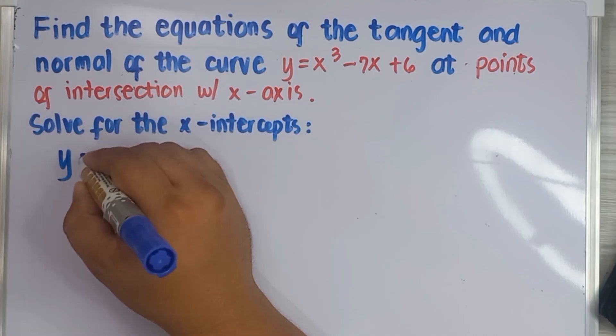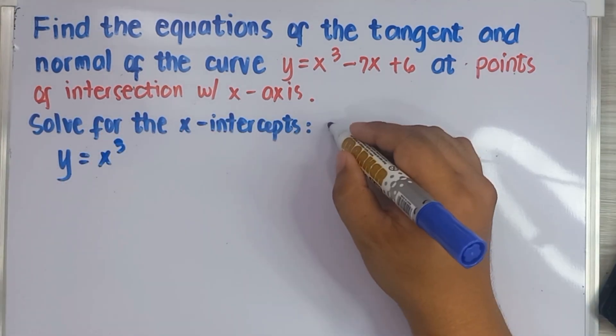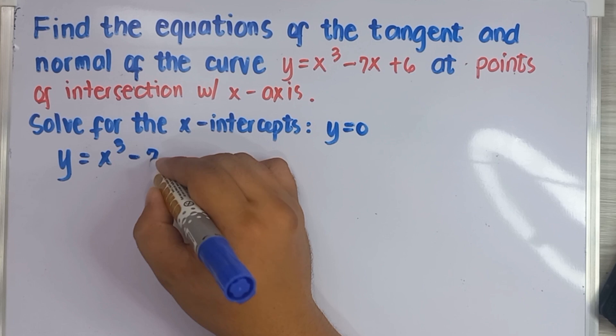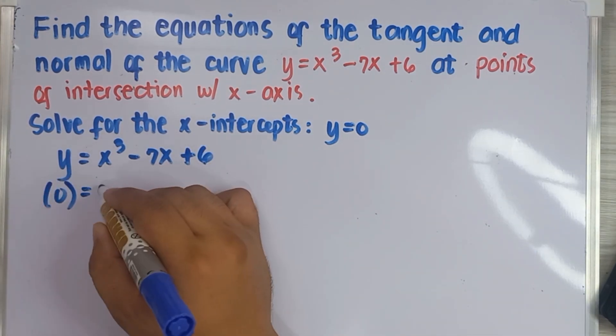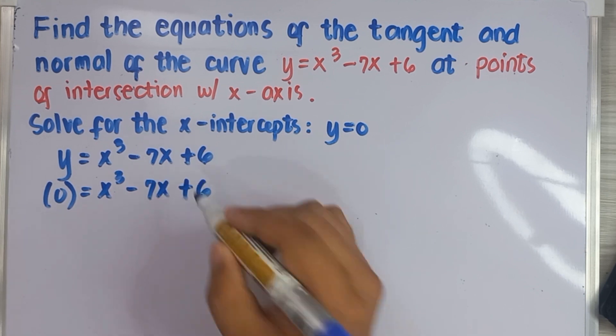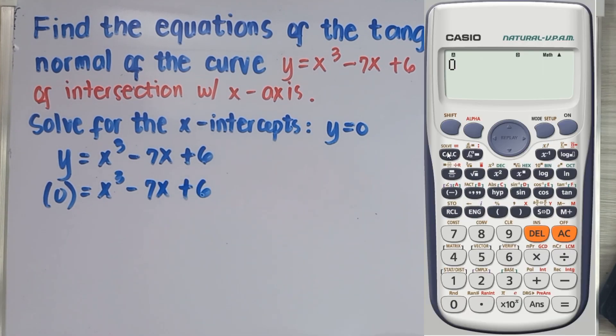If we have to solve for the x-intercepts, you will use y equals 0. Now, I will show you how to solve all three values of x using our calculator. Input the equation: 0 equals x³ minus 7x plus 6, press shift, solve, then equals.